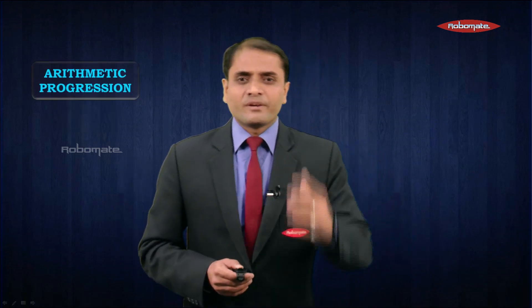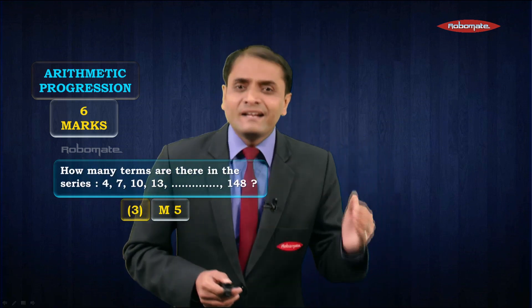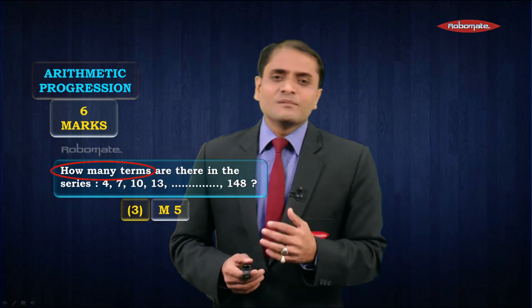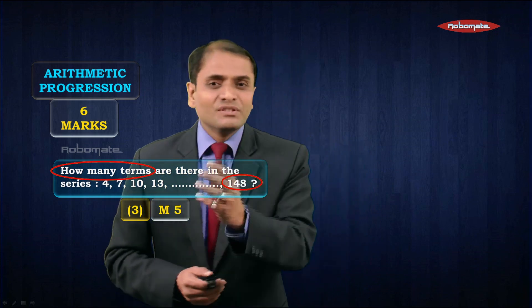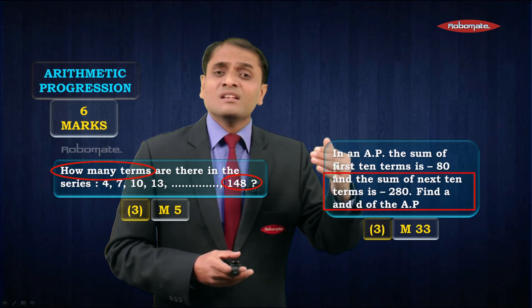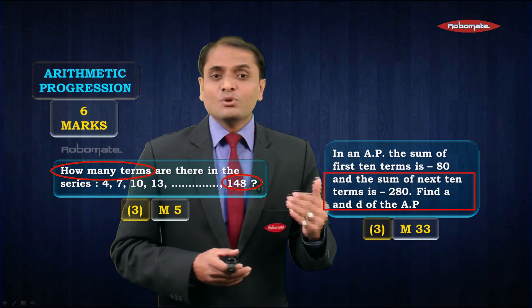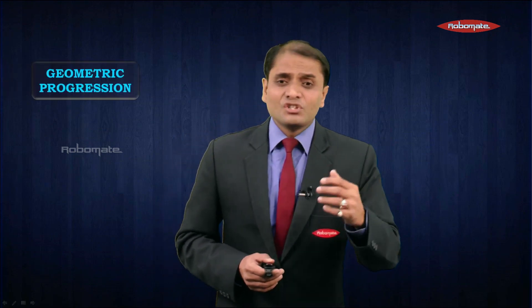That brings us to the last two chapters — arithmetic progression and geometric progression. From AP and GP together, you can expect around three questions: two from AP and one from GP. For arithmetic progression, questions are based on the formulas for tn and sn. For example, they may ask how many terms are there in a series where the last term is 148, requiring the tn formula. Or they give you the sum of certain terms and ask you to find the values of a and d, requiring the sn formula.